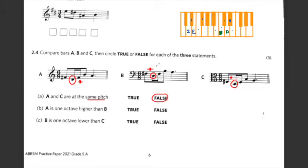This D that I've just drawn is the exact same note as this one in the treble clef. So A is one octave higher than B. That seems to be true.